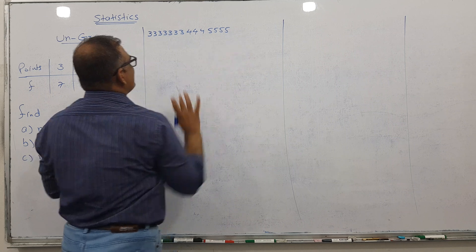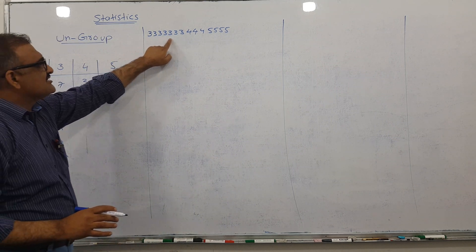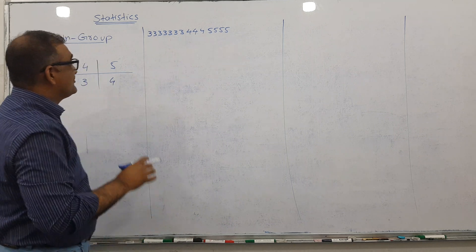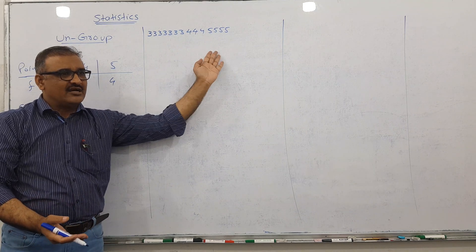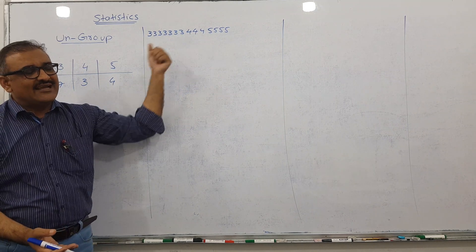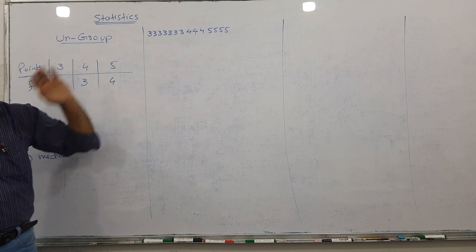The total number is 7 plus 3 plus 4 equals 14 numbers. This behaves like raw data. When I transform raw data into table form, it's called ungrouped data.